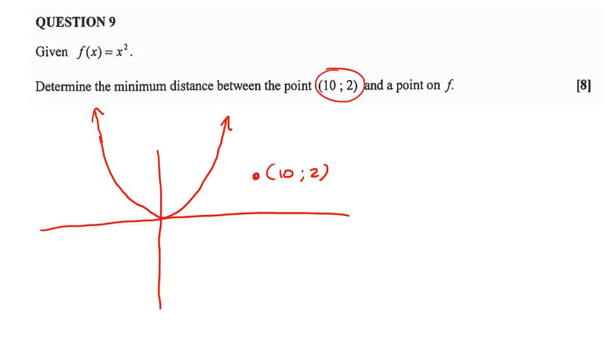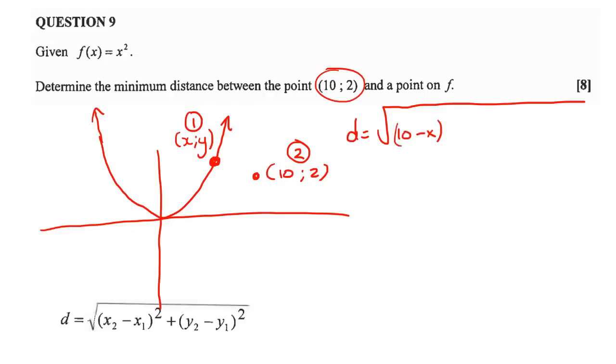Now, what they say is they say determine the minimum distance between the point and a point on f. So we don't know where the point on f is. Maybe it's over here. And what we'll do is we'll just call it x and y. Now they've asked us to calculate the minimum distance. So we'll just go get the distance formula and we'll make a formula. So I'll use, this is my point number two. It doesn't matter. You can do it the other way. And I'll use that as my point number one. And then I'm just going to say that the distance is going to be equal to 10 minus x squared plus 2 minus y squared.